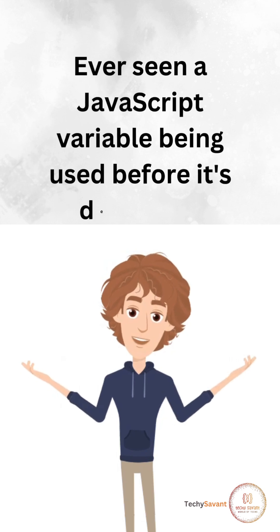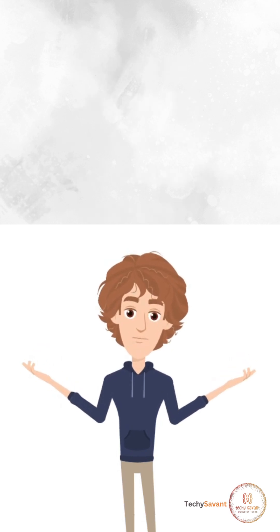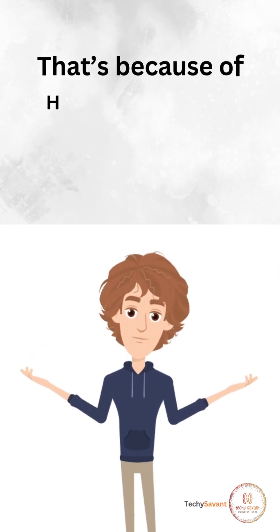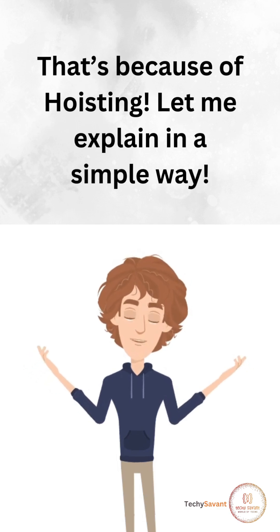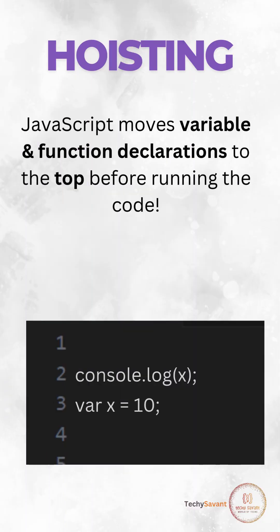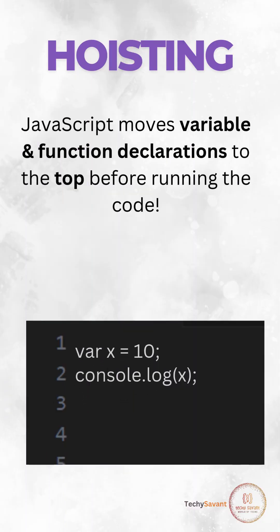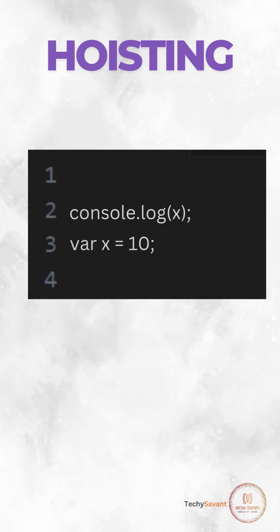Ever seen a JavaScript variable being used before it's declared? That's because of hoisting. Hoisting means JavaScript moves variable and function declarations to the top before running the code.